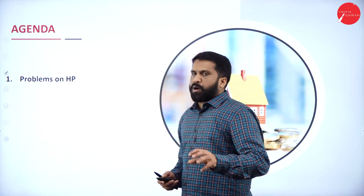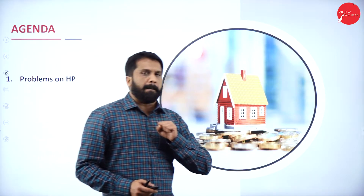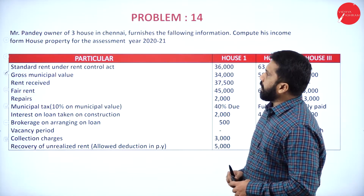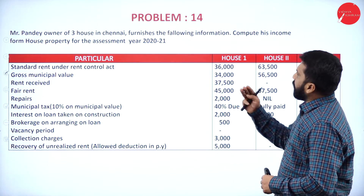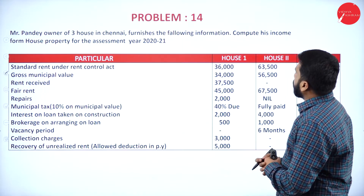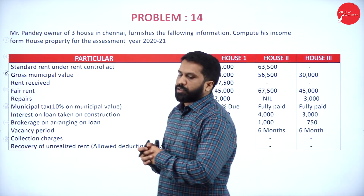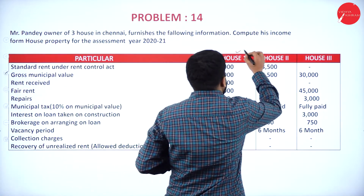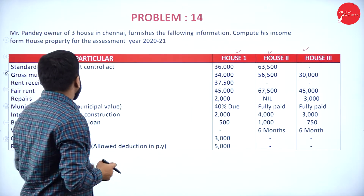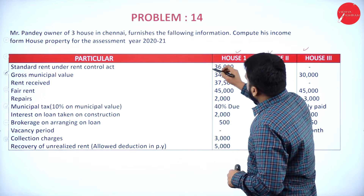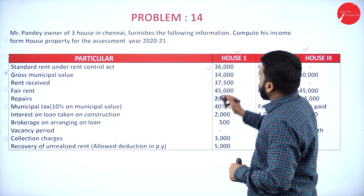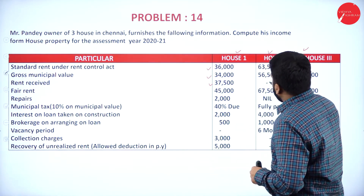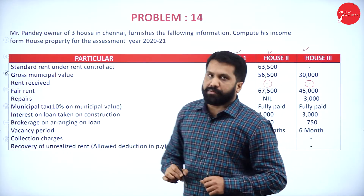The agenda is problems on house property. The question is: Mr. Pande, owner of three houses in Chennai, furnishes the following information. Compute his income from house property for the assessment year 2020-21. The information given covers House 1, House 2, and House 3, including standard rent under Rent Control Act, gross municipal value, and rent received. Some houses have no rent received.